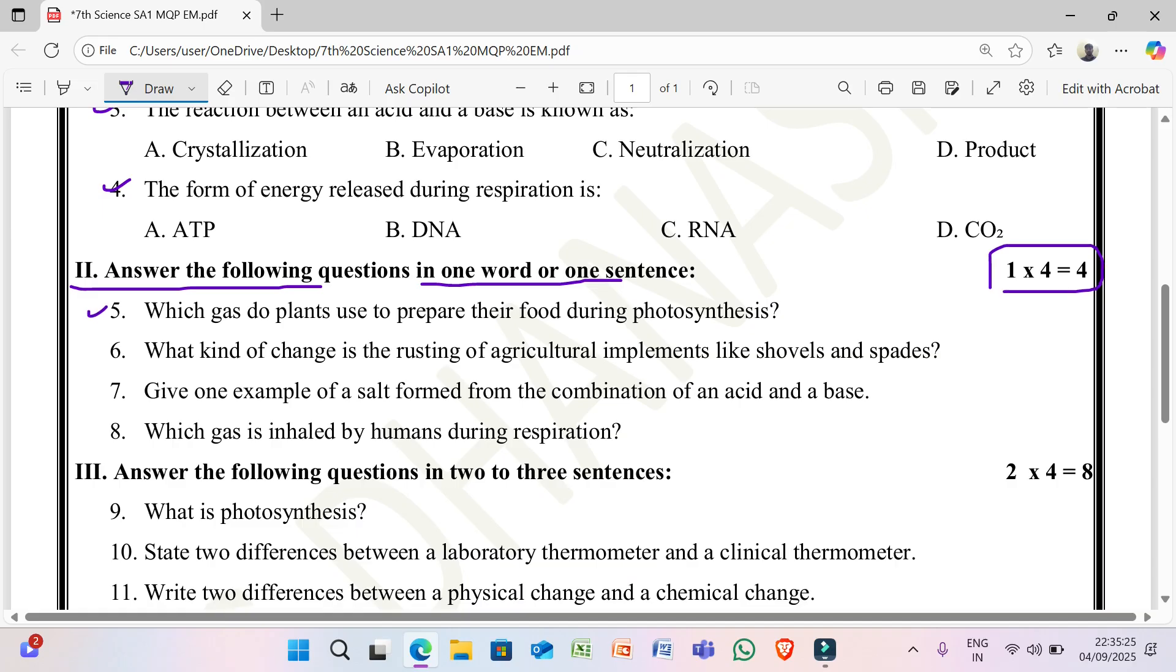5th question, which gas do plants use to prepare their food during photosynthesis? 6th question, what kind of change is the rusting of agricultural implements like shovels and spades? 7th question, give one example of a salt formed from the combination of an acid and base. 8th question, which gas is inhaled by human during respiration?